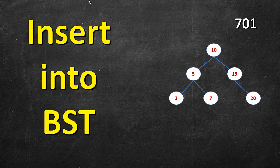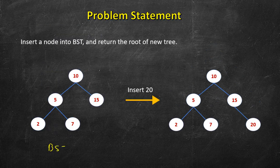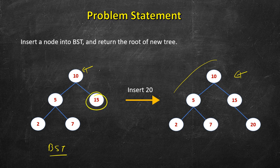In this problem we have a binary search tree and we have to insert a new node into it. We have this binary search tree and let's say we want to insert 20. After the insertion we can have multiple valid binary search trees with the same set of nodes. We are comparing 20 with the root — 20 is more, so it should go to the right side. The problem allows you to return the root of any valid binary search tree created after the insertion.